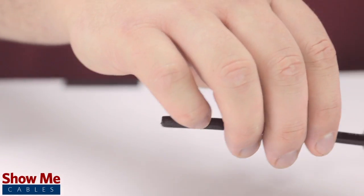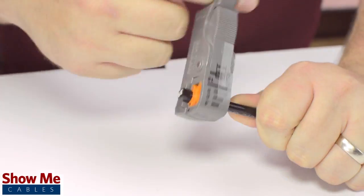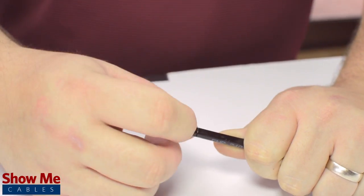Start by inserting the ferrule over the outer jacket of the cable. Then, using your cable stripper, strip back the outer jacket and dielectric.